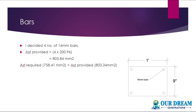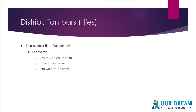Now, considering the weight, if we use 16 mm bars, we can get the required area. So I will provide 4 numbers of 16 mm bars. Let me check — I need to verify the Ast provided. 4 bars × area of one 16 mm bar = 4 × 200.96 = 803.84 mm², which is greater than the required 758.41 mm². So the Ast provided is adequate.